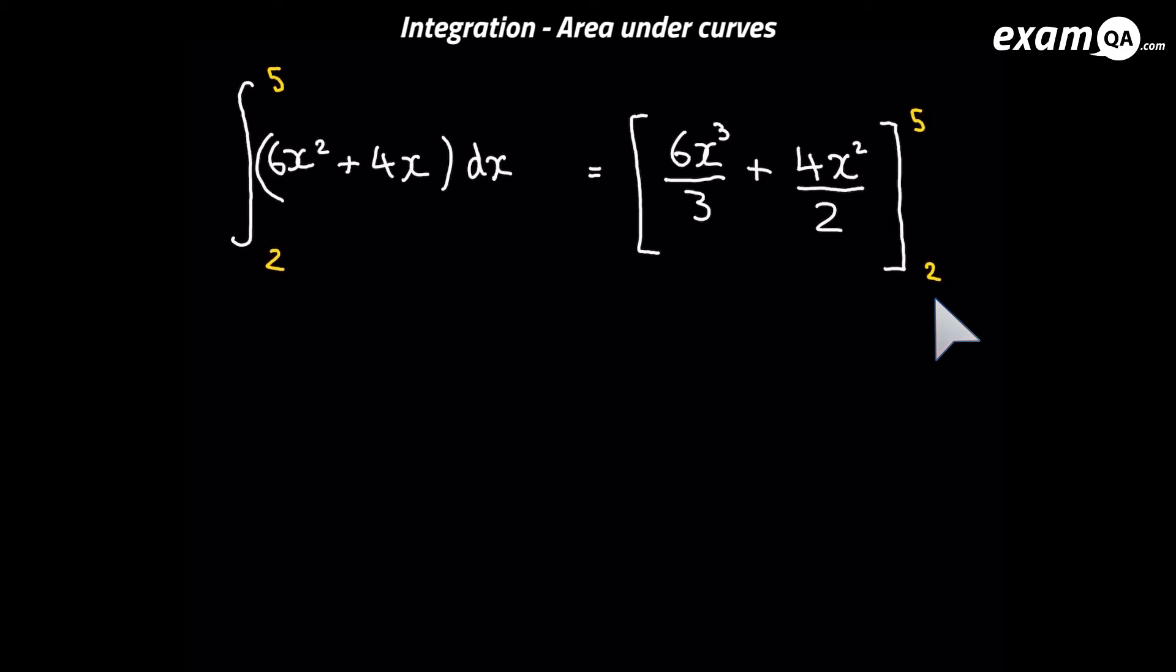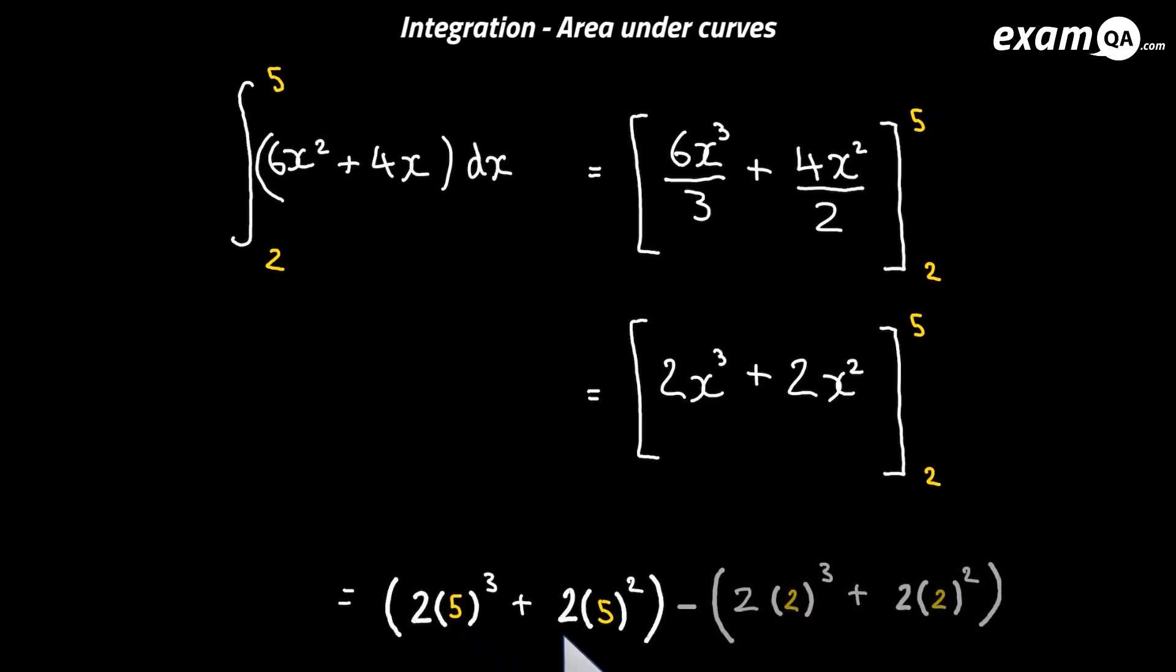Let's tidy this up a little bit before we continue and now we're going to use these limits. How do we use them? This expression we've made by integrating we're going to throw the upper limit five into it and we're also going to put the low limit two into it and those two answers we're going to subtract them.